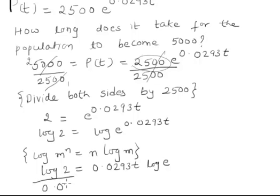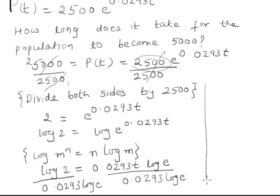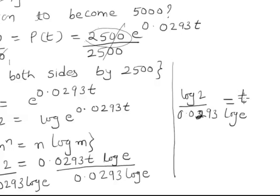That is 0.0293 log e, and this side also 0.0293 log e. So on the left side you are left with log 2 over 0.0293 log e, and this is your t.